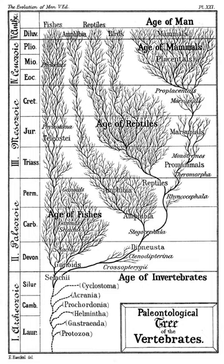Evolution does not strive for more advanced, more intelligent, or more complex life forms. For example, fleas, wingless parasites, are descended from a winged ancestral scorpion fly. And snakes are lizards that no longer require limbs, although pythons still grow tiny structures that are the remains of their ancestors' hind legs. Organisms are merely the outcome of variations that succeed or fail, depending on the environmental conditions at the time.